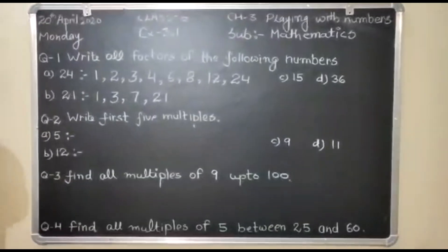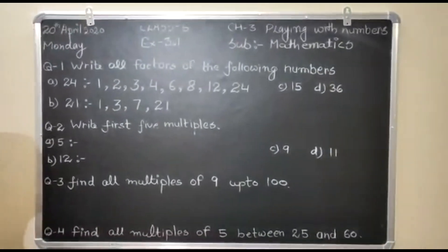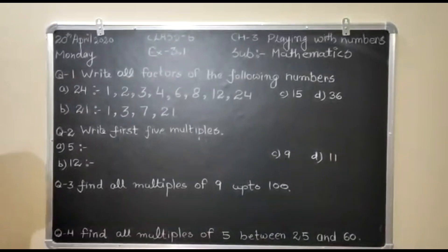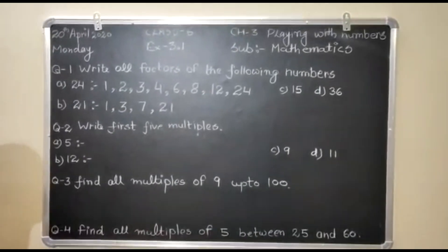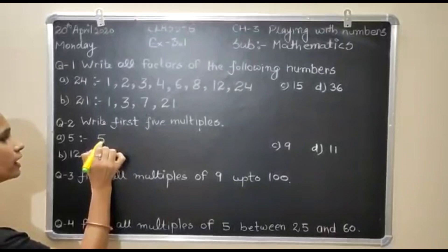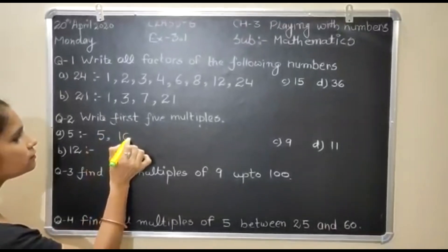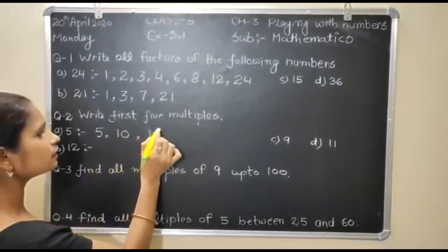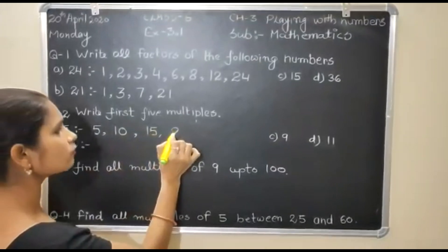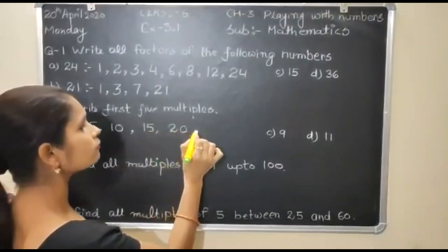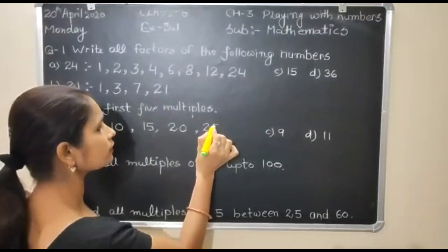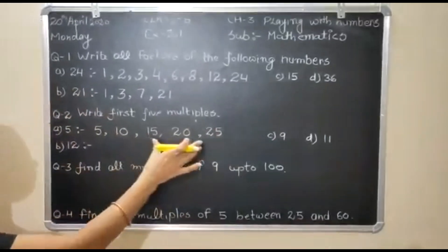Question number 2, write first 5 multiples. Multiples means you have to write tables. It means 5 ones are 5, 5 twos are 10, 5 threes are 15, 5 fours are 20, 5 fives are 25. These are first 5 multiples.